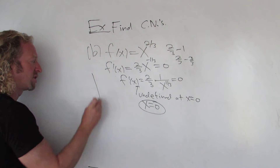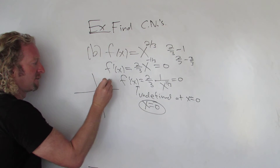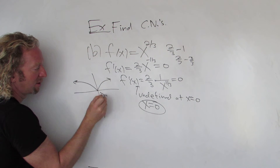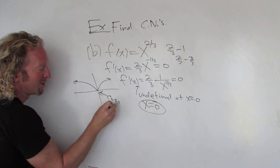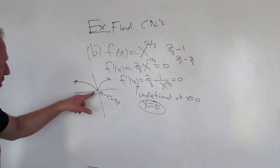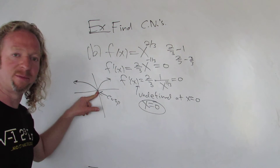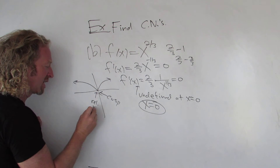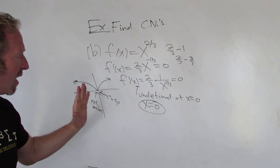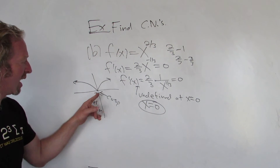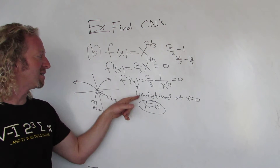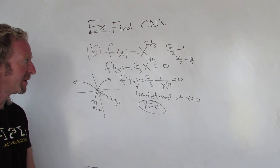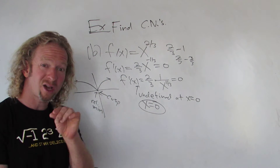If you look at the graph of this function, it has what's called a cusp at x = 0. In this case you do have a relative minimum there. So this is an example of a function that has a critical number arising from the derivative being undefined, and it does have a relative minimum.